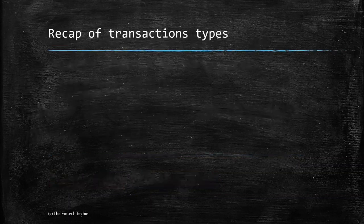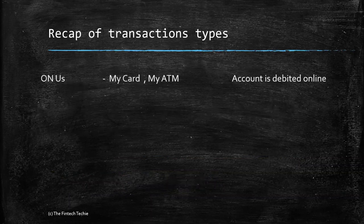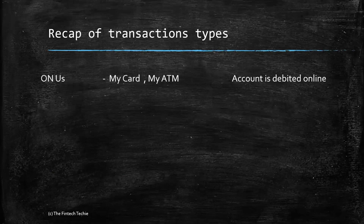Let's do a quick recap of the different transaction types. Number one is the owner's transaction, which is the bank's card used at their own ATM. In such cases, the account is debited online.